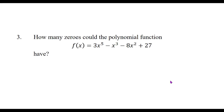How many zeros could the polynomial function f(x) = 3x to the fifth minus x cubed minus 8x squared plus 27 have? The degree is 5, so it could have 5 zeros. In fact, counting multiplicity, it has to have exactly 5. But that doesn't mean it has to have 5 different zeros — it could have more than one of the same zero.